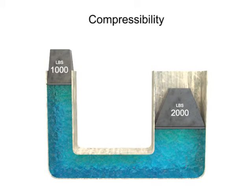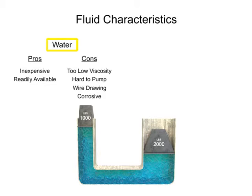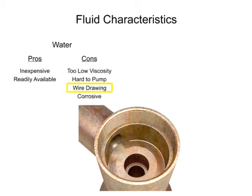Years ago, water was used as the first hydraulic fluid because there was no other liquid available in such large quantities at such a low cost. There are some major drawbacks to using water as a working fluid. Due to its low viscosity, it is difficult to pump. Additionally, the speed at which it flows through the system causes an effect known as wire drawing. Wire drawing occurs when the water flow erodes or scores a pathway in the metal of machinery as it goes around corners and through orifices.